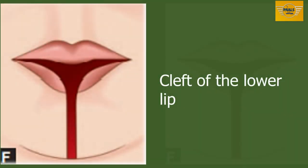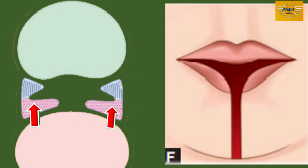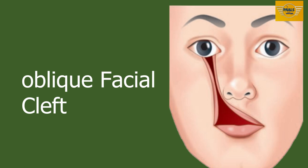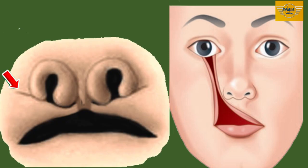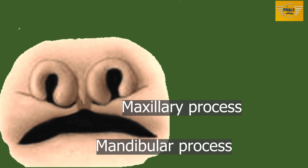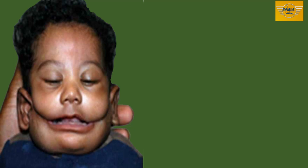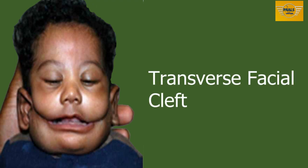Looking at cleft of the lower lip: when the two mandibular processes fail to fuse with each other in the midline, the lower lip shows a defect in the midline. Oblique facial cleft occurs when there is non-fusion of the maxillary process with the lateral nasal process, giving rise to a cleft running from the medial angle of the eye to the mouth — in this case, the nasolacrimal duct is also not formed. When the maxillary and mandibular processes refuse to fuse, it leads to a transverse facial cleft showing a cleft running from the angle of the mouth to the ear.